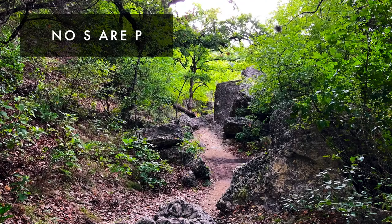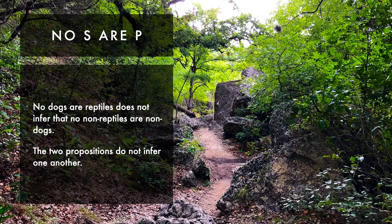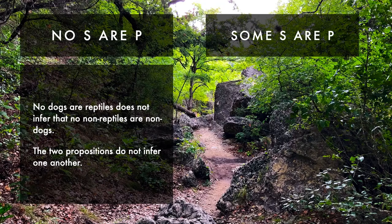Now the universal negative: 'No dogs are reptiles' has the contrapositive 'No non-reptiles are non-dogs.' But cats, for instance, are both non-reptiles and non-dogs — so there are things in the complement of reptiles that are also in the complement of dogs. That means the universal negative does not infer its contrapositive. The universal negative is not logically equivalent to its contrapositive.